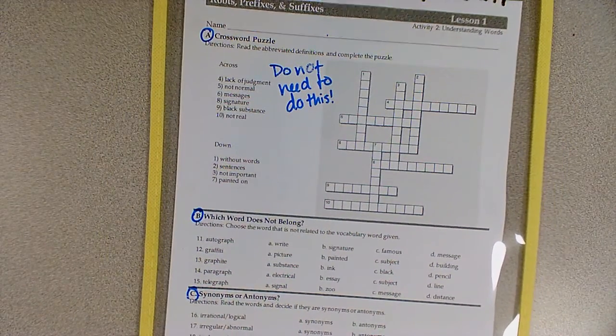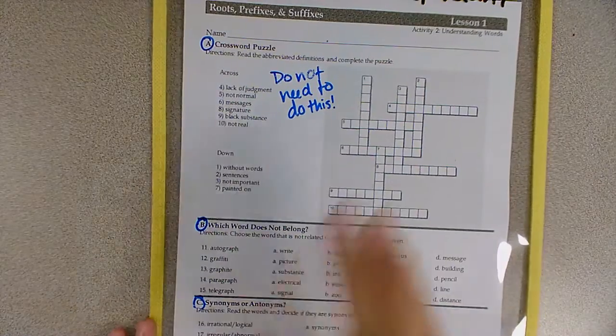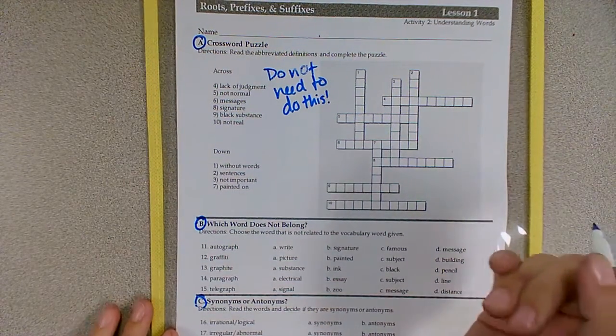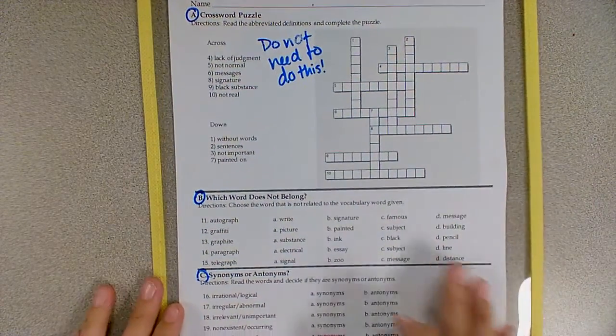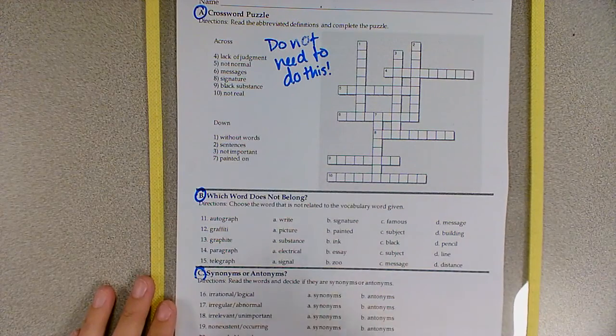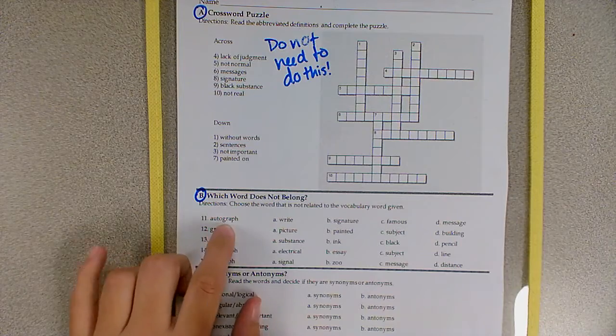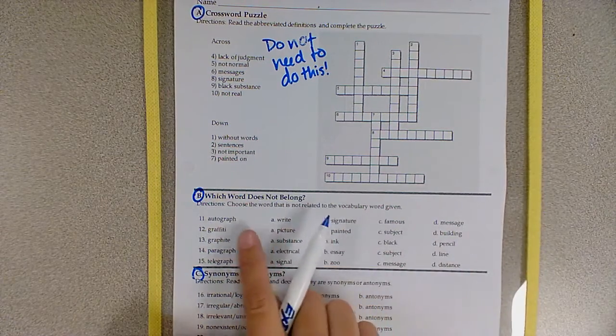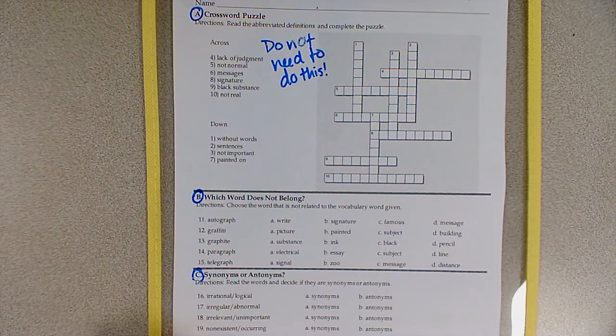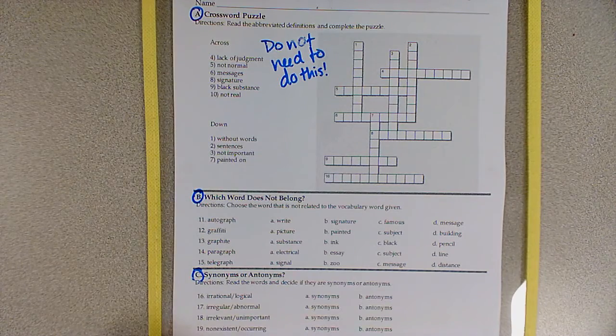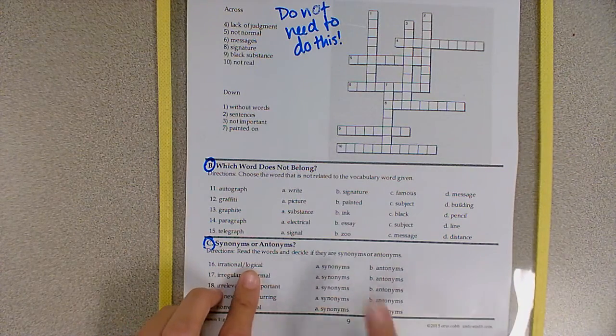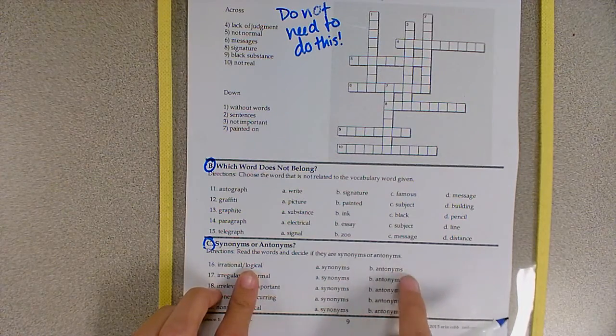So for your independent practice, you are looking at Activity 2 and Activity 3. Activity 2 has three parts. Part A is a crossword puzzle. You do not need to do this. If you want to, because you have extra time, or it just looks fun, you can, but you don't need to. Part B, you are determining which word doesn't belong. For example, number 11, your word is autograph. Which of the four words—right, signature, famous, and message—doesn't belong and doesn't mean something similar to autograph, or doesn't relate to autograph? In Part C, synonyms or antonyms? So you read each pair of words and decide, are they synonyms, are they the same, or are they antonyms, are they opposites?